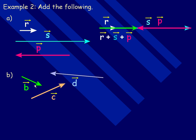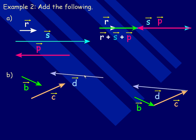In part b, we're going to add b, c, and d. I'll make a copy of my b vector, then draw the c vector with its tail starting right there. The head of c is right here, so I start drawing the tail of d there, and d goes in this direction. So the b plus c plus d vector goes from here and its head is right there — that is the b plus c plus d vector.